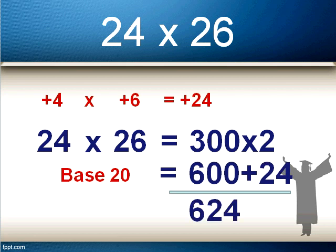We add 24 to the number from step one: 600 plus 24 gives us 624. So 24 times 26 is 624. You may want to pause and watch this part again to get your head around the two steps when using base 20.